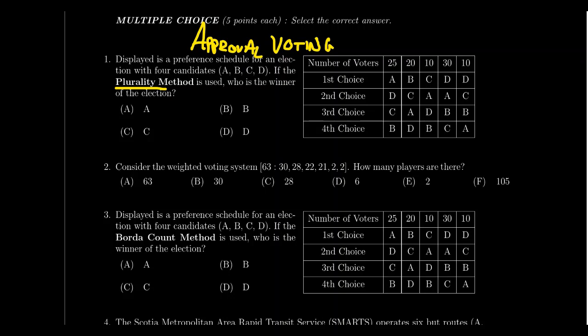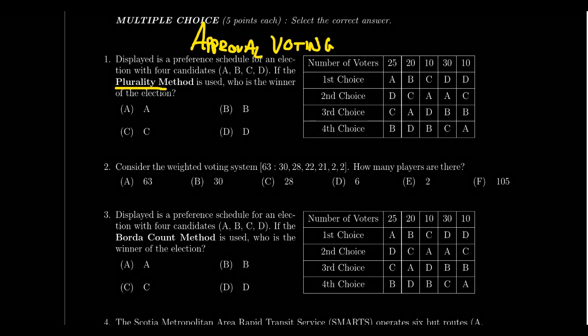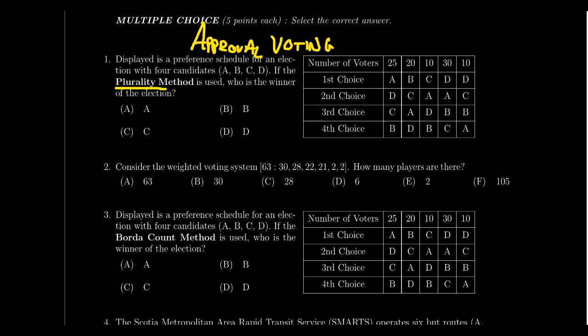With plurality, you look for the candidate who receives the most first-place votes — that's the winner, nothing else is considered. With approval voting, it's very similar: the winner is whoever receives the most approval votes, and a voter can approve more than one candidate. You just count up approvals and see who gets the most. Approval voting was covered in Lesson 20; plurality was introduced in Lesson 17.